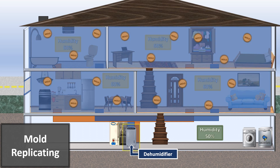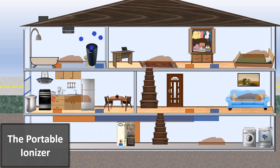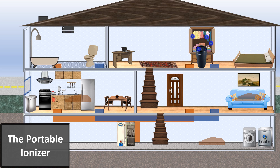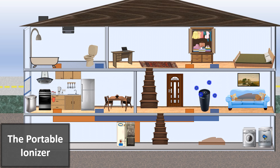At 60% humidity mold can grow rapidly. Dehumidifiers are expensive and use too much power to have in every room, so a portable ionizer is a practical solution. Move it from the bathroom to the bedroom, kitchen, living room, and basement over a few hours. On rainy days or when indoor humidity is high, using a portable ionizer is a good idea to minimize mold growth.